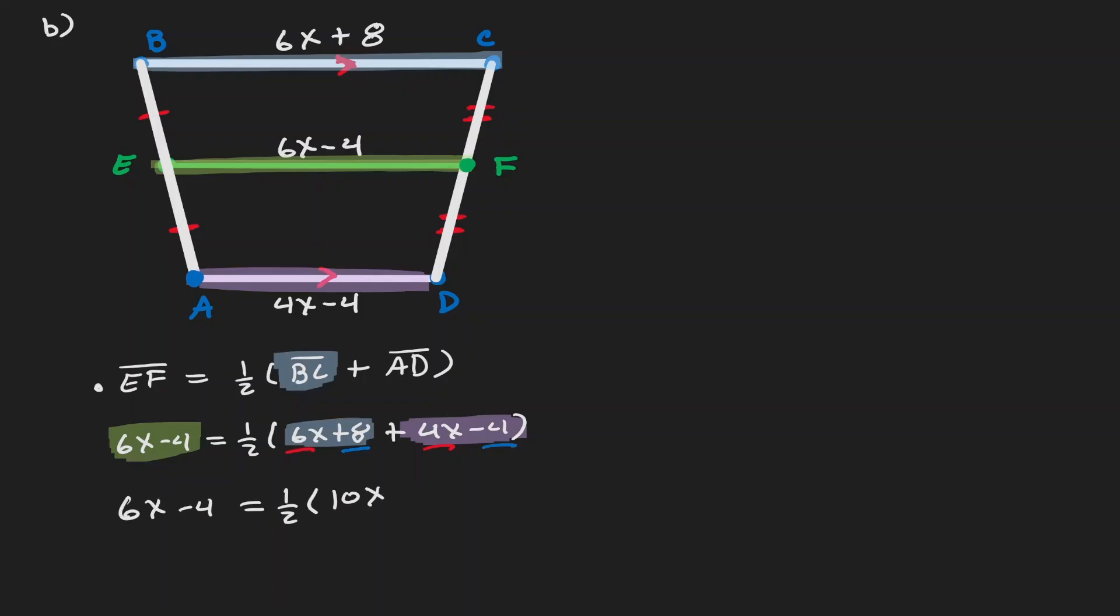So we got 10x plus 4. Let's distribute that one half. 10 divided by 2 is 5x, and 4 divided by 2 is 2.